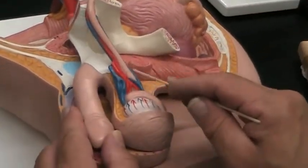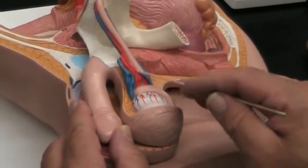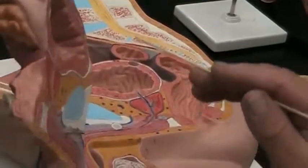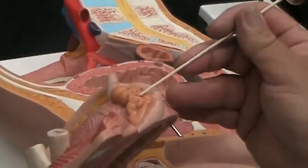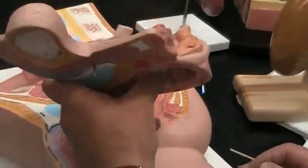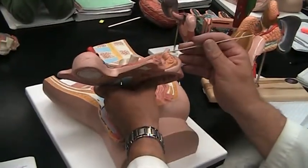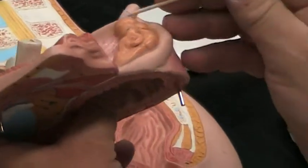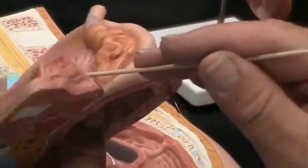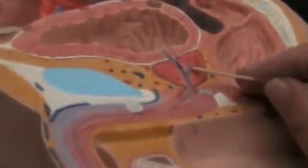Here is the spermatic cord made up of blood vessels, the cremaster muscle, lymph vessels, and so on. As this thing goes around, it goes past the seminal vesicles or the seminal glands. It now enters the prostate gland where it now is called the ejaculatory duct.